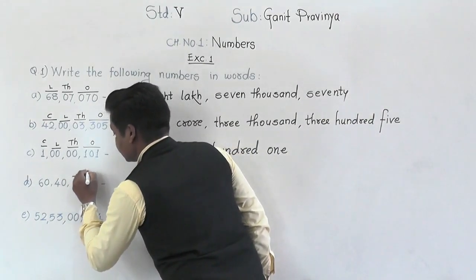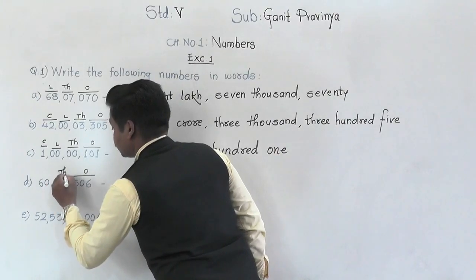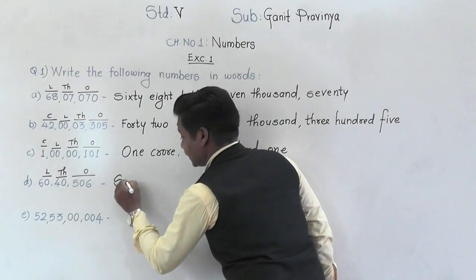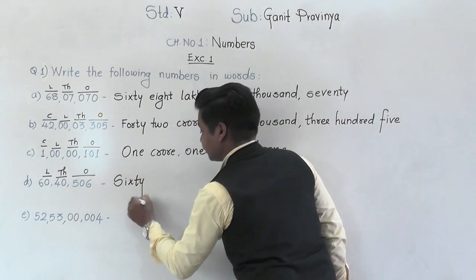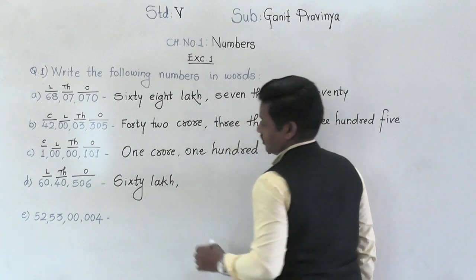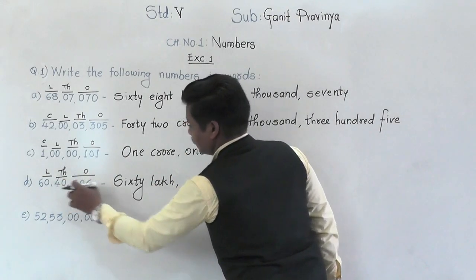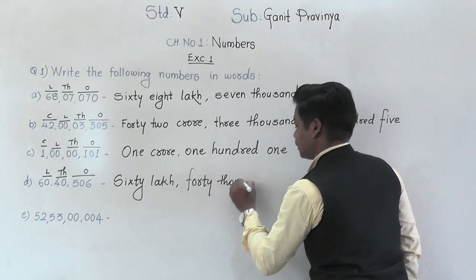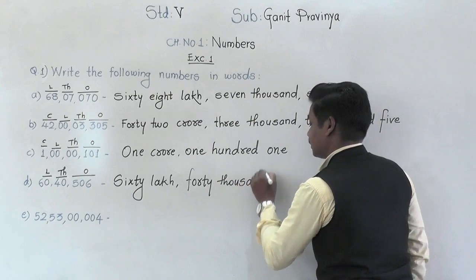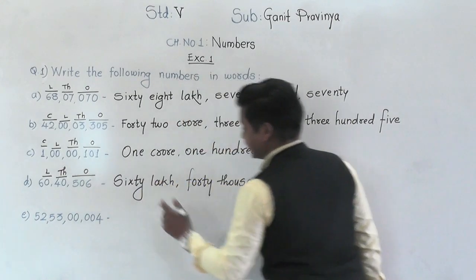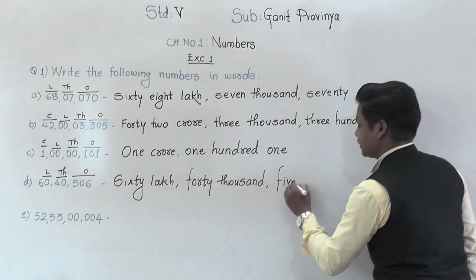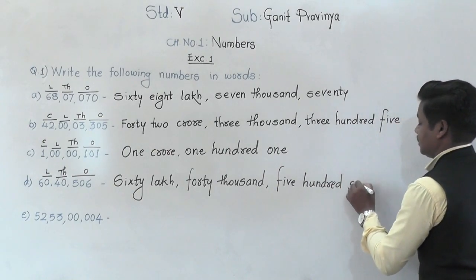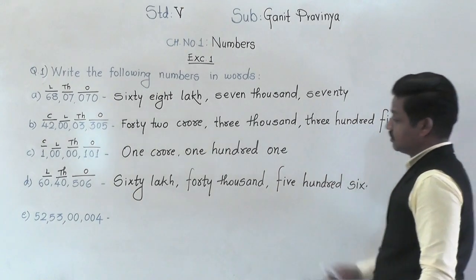For the next number: in the lakh group there is 60 — so 60 lakh. In the thousands group, 40 — so 40,000. And in the ones group there is 506. So the number name is 60 lakh 40 thousand 506.